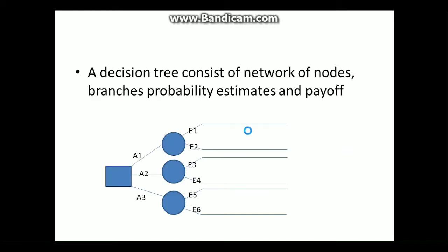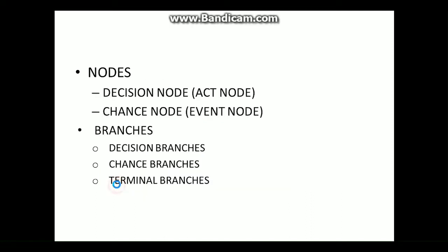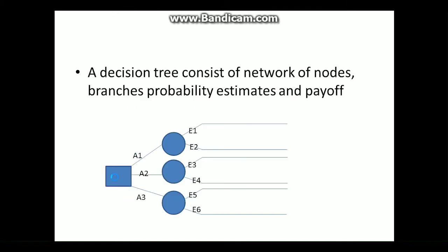A Decision Tree is an example of a decision diagram. In this, we can decide a decision — this is a problem or solution. There are three decisions: A1, A2, and A3. From these three decisions, we can select one decision.